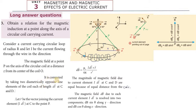It is computed by taking two diametrically opposite elements of the coil, each of length dL, at points C and D. As usual, we can calculate the first portion.